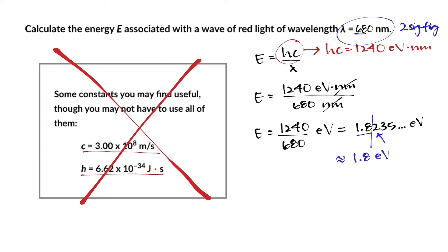So you can round it off and get your final answer as 1.8 electron volts and that's the amount of energy associated with this red light.